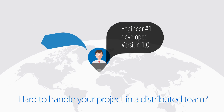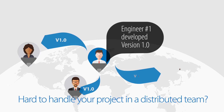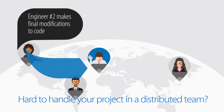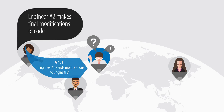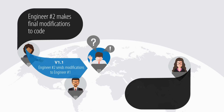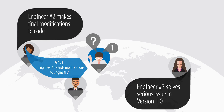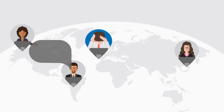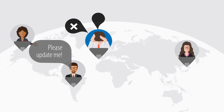Hard to handle your project in a distributed team? Traditionally, keeping all teammates coordinated and project versions aligned has not been an easy task. How to merge projects and keep the team totally synchronized?